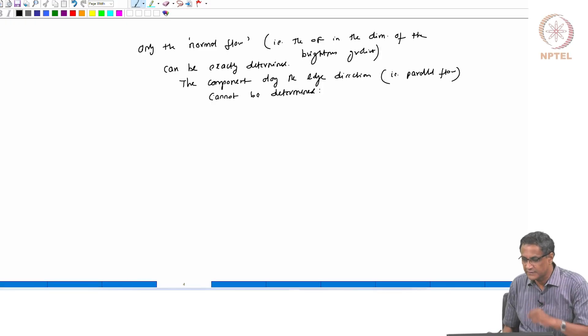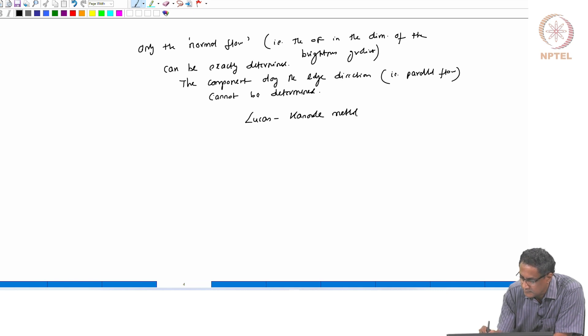Now, in order to handle this, we can clearly see that if you have a larger aperture perhaps, we can do things better. That is exactly what this Lucas-Kanade method does. So what does this Lucas-Kanade method do?